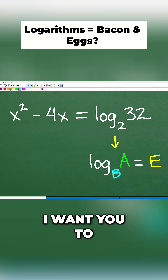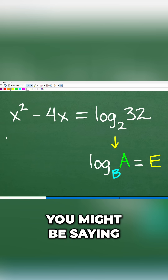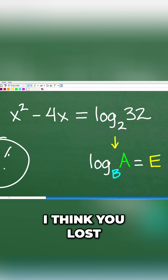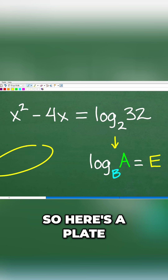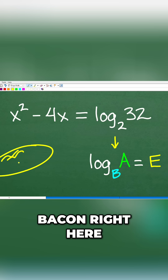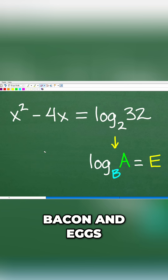When you think of logarithms, I want you to think of bacon and eggs. Now, you might be saying, 'Mr. YouTube Math Man, I think you lost your mind. What are you talking about bacon and eggs? That's like, you know, food.' Well, yes, indeed. It's just a nice little memory device. So here's a plate, and we have some bacon right here, and we have some eggs. Bacon and eggs is just a little memory device, and hopefully this is ingrained in your long-term memory — something you want to remember when you want to understand logarithms.